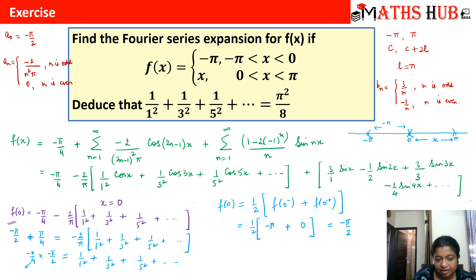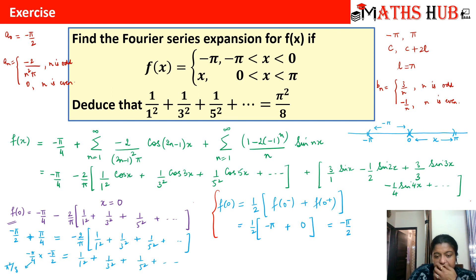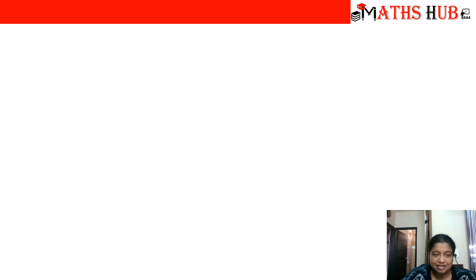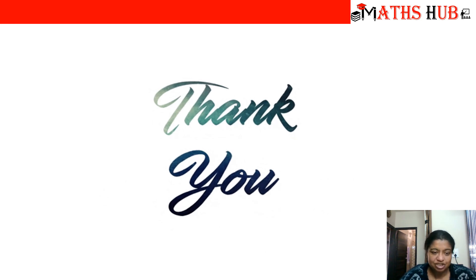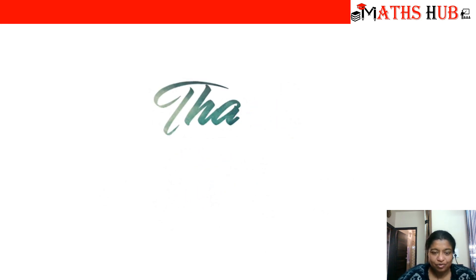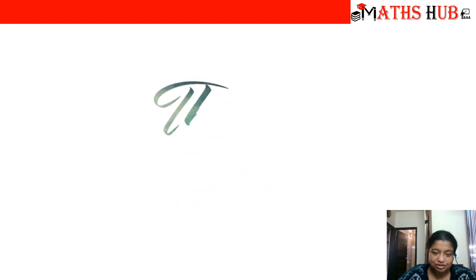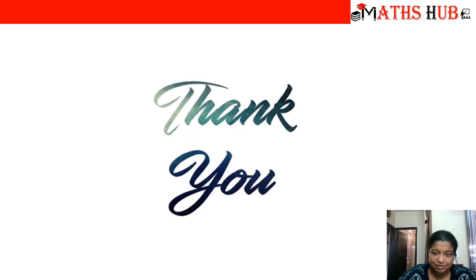So this term turns out to be π²/8. I hope Dirichlet's conditions are now clear — how we calculated f(0) at the point of discontinuity using the average of the left and right limits. Thank you so much for listening. If you have subscribed to my channel, please share it with others; if not, do subscribe to get the latest updated videos. If you like the video, hit the like button. Believe in yourself and you will be able to succeed.